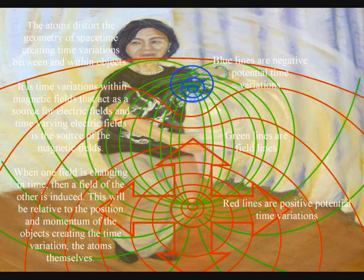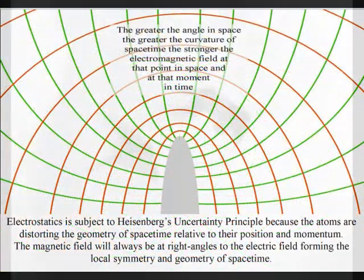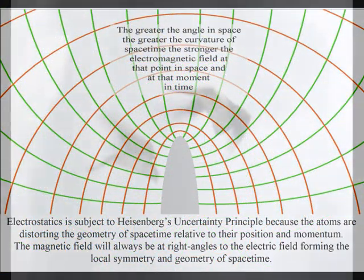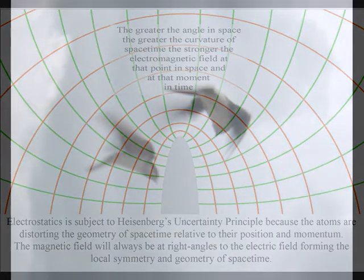Creating time variations between and within objects. It is time variations within magnetic fields that act as a source for electric fields, and time varying electric fields is the source of magnetic fields.